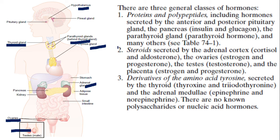There are three general classes of hormones based on their chemical nature. First are the proteins and polypeptides — produced by the anterior pituitary, secreted by the posterior pituitary, from the pancreas we have insulin and glucagon, and from the parathyroid gland we have parathyroid hormone. These are all examples of proteinaceous hormones; more are given in the table in the slide.